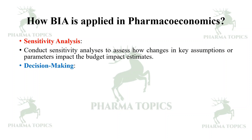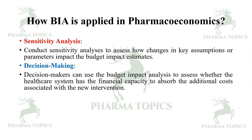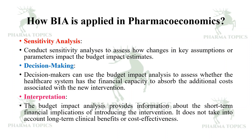Conduct sensitivity analysis to assess how changes in key assumptions or parameters impact the budget impact estimates. Decision making: decision-makers can use BIA to assess whether the healthcare system has the financial capacity to absorb the additional costs associated with the new intervention. Interpretation: BIA provides information about the short-term financial implications of introducing a new intervention; it does not take into account long-term clinical benefits or cost-effectiveness.